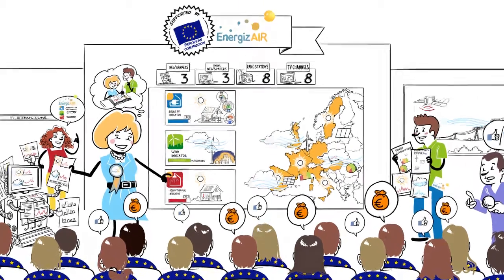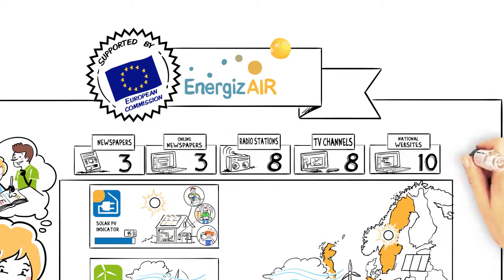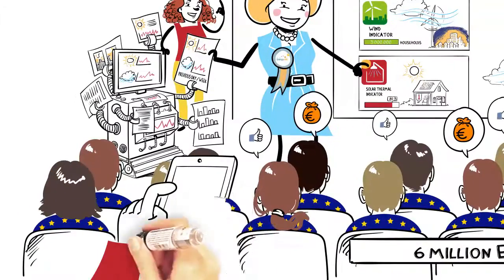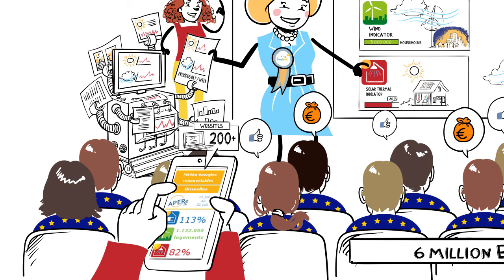But Energizer goes way beyond the weather forecast with 10 national websites and a strong presence in social media. A widget has also been developed which allows customized data to be shown anywhere. Energizer indicators are displayed in this way on more than 200 websites.